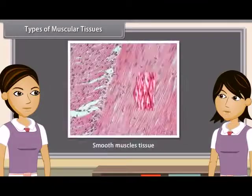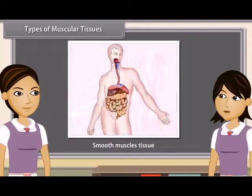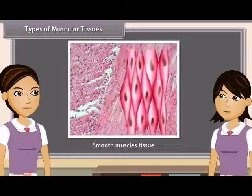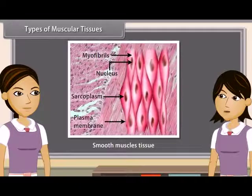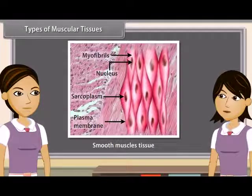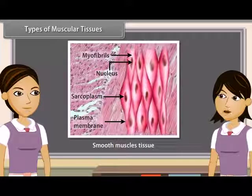Smooth muscles are present in the wall of stomach, intestine, blood vessels, iris of eye, and ureter. They are small sized, uninucleated, and spindle shaped, and are generally arranged in layers. They are involuntary muscles, as they cannot be started or stopped at will.